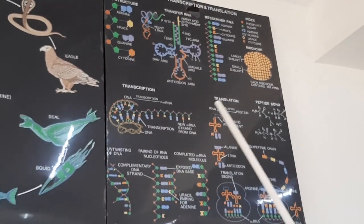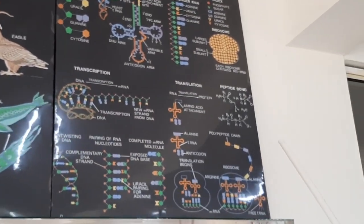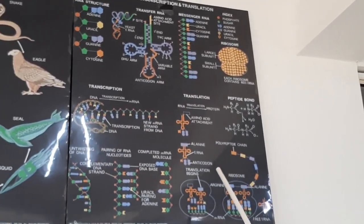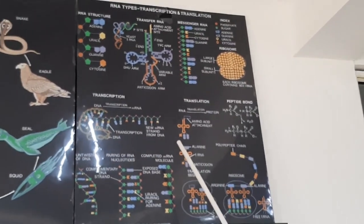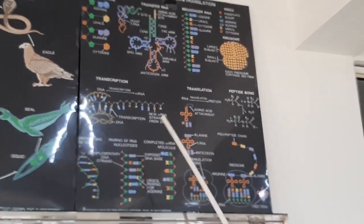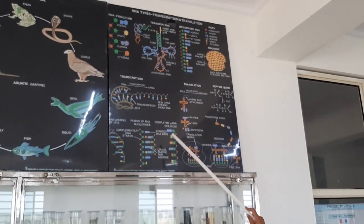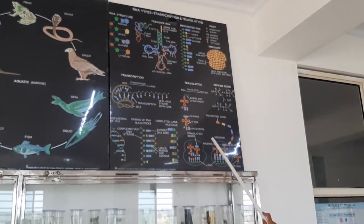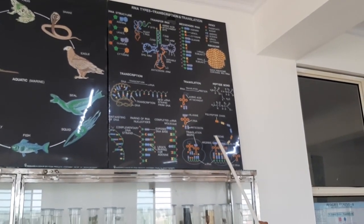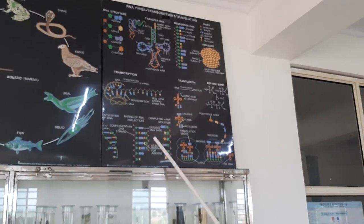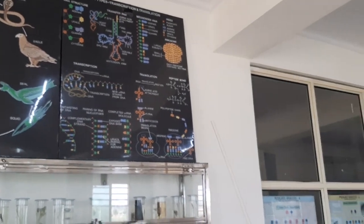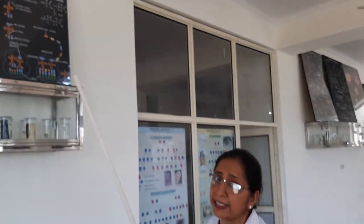This is the chart of RNA — different types of RNA — and how transcription and translation take place. We have already studied this in the 12th standard.